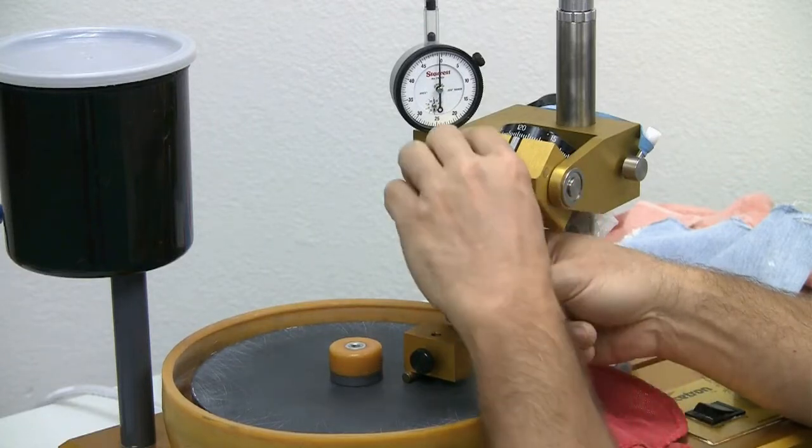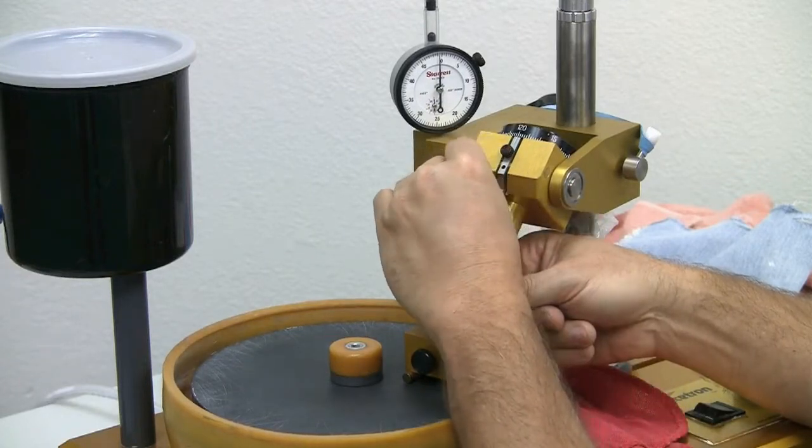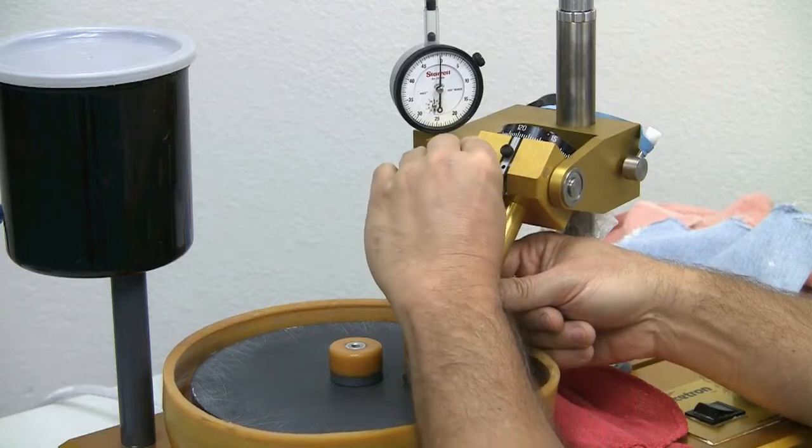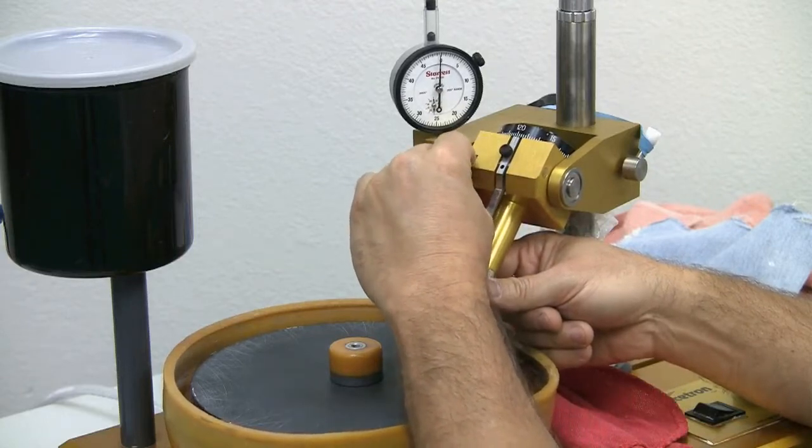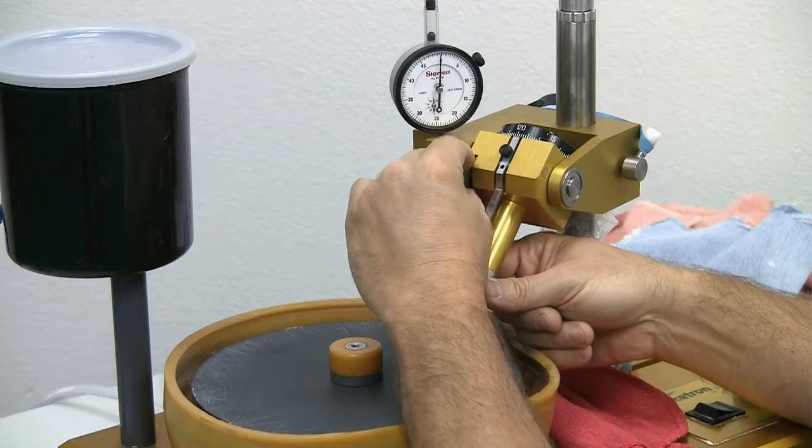All we would need to do to fix that is adjust the cheater to remove half of the total travel of the needle between those two positions.